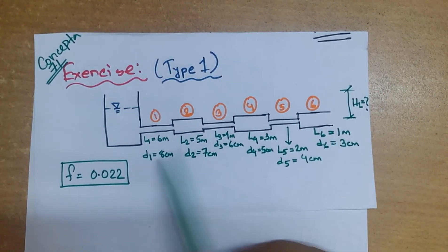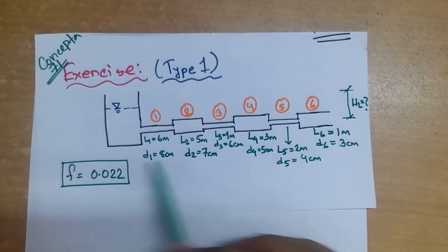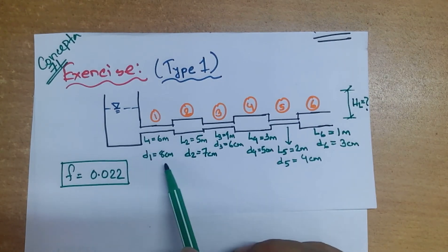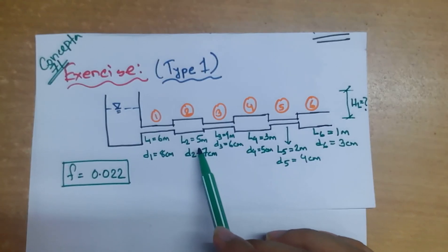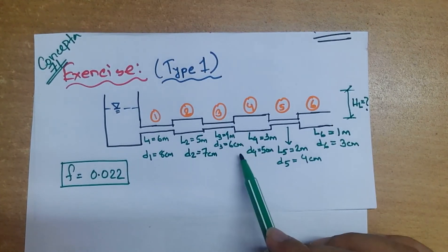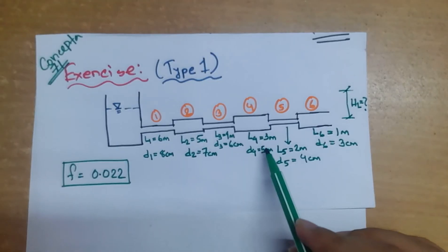We have the length of the pipes. First pipe is 6 m with diameter 8 cm. Second pipe is 5 m with diameter 7 cm. Third pipe is 4 m with diameter 6 cm. Fourth pipe is 3 m with diameter 5 cm.